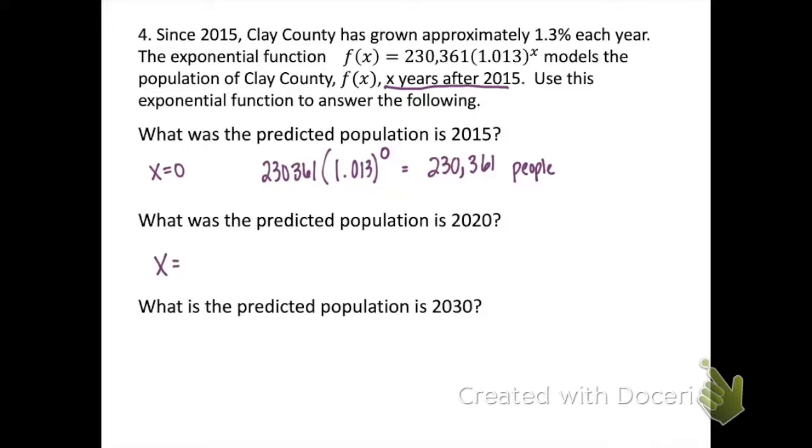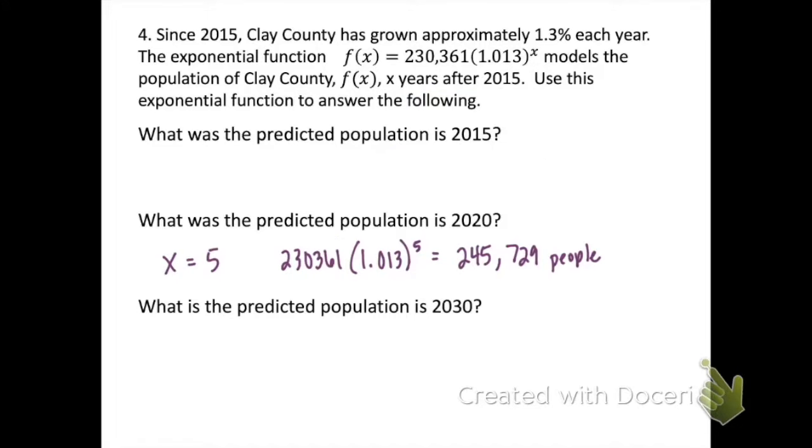Next, it asks what was the predicted population in 2020? So 2020 is 5 years after 2015, so our x value will be 5. Let's plug that into our equation. And we get 245,729 people. I did a quick Google search to see what the Clay County population was in 2020, and this model only is about 700 people off from what it actually was. So that's pretty awesome.